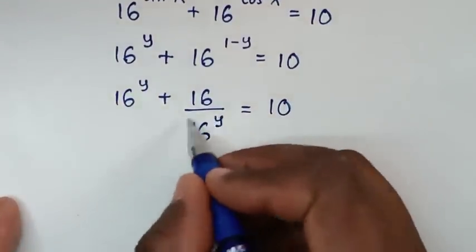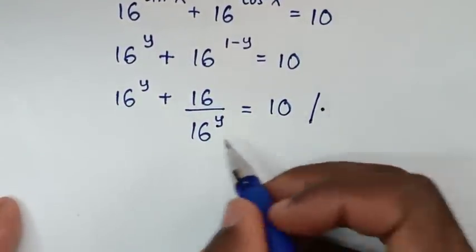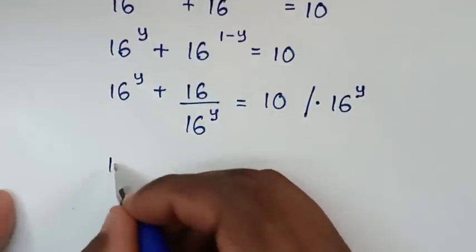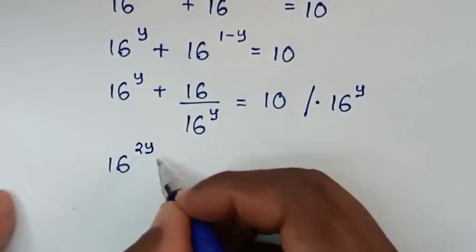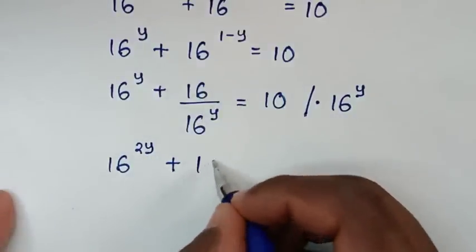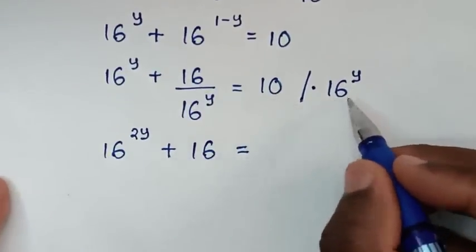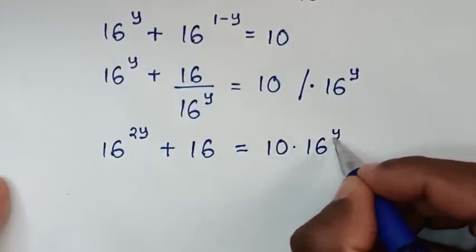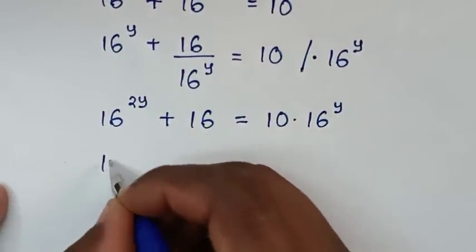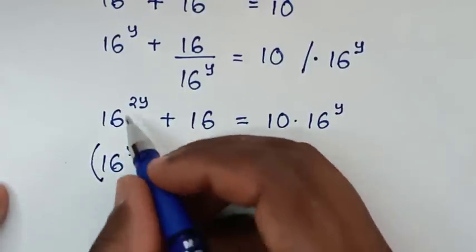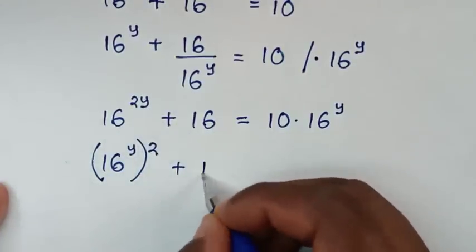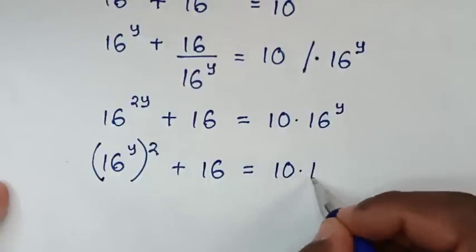Then to remove this denominator, we multiply the whole equation by 16 power of y. So 16^y times 16^y is 16 power of 2y. Then plus 16^y will cancel the denominator's 16^y, leaving 16. So we get 16 power of 2y plus 16 is equal to 10 times 16 power of y.